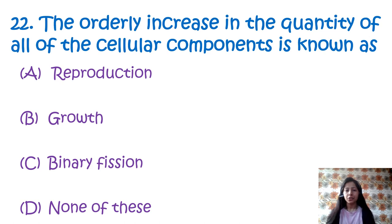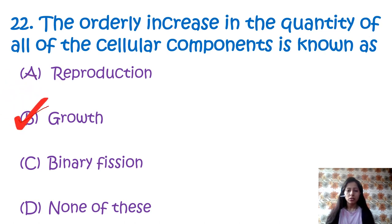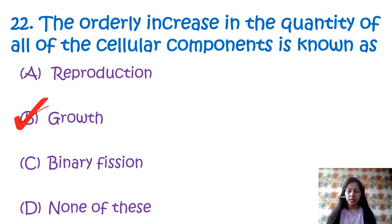Question 22: The orderly increase in the quantity of all cellular components is known as — option A: reproduction, option B: growth, option C: binary fission, option D: none of these. The correct answer is option B, growth. Reproduction is the process in which organisms make a copy of themselves for survival. Binary fission is a type of asexual reproduction seen in bacteria where a single cell organism splits into two individual organisms.